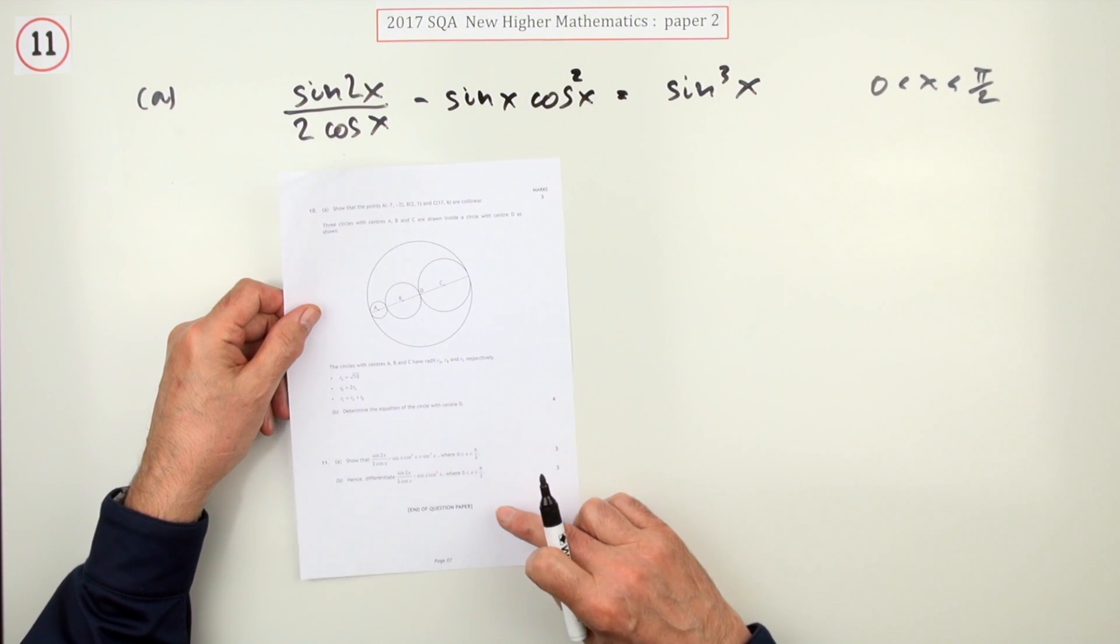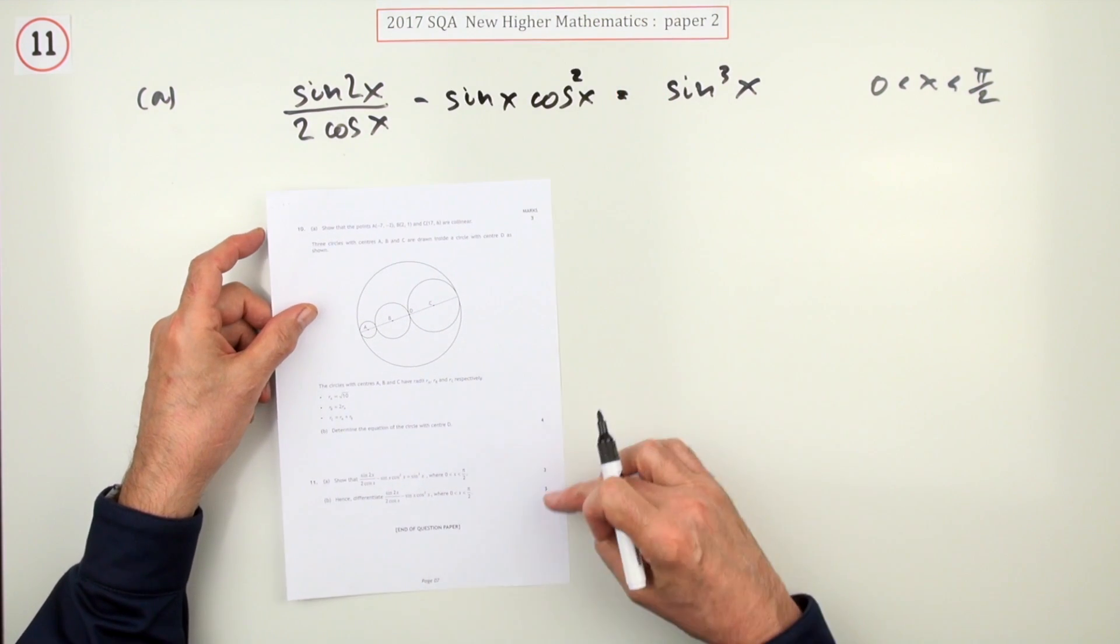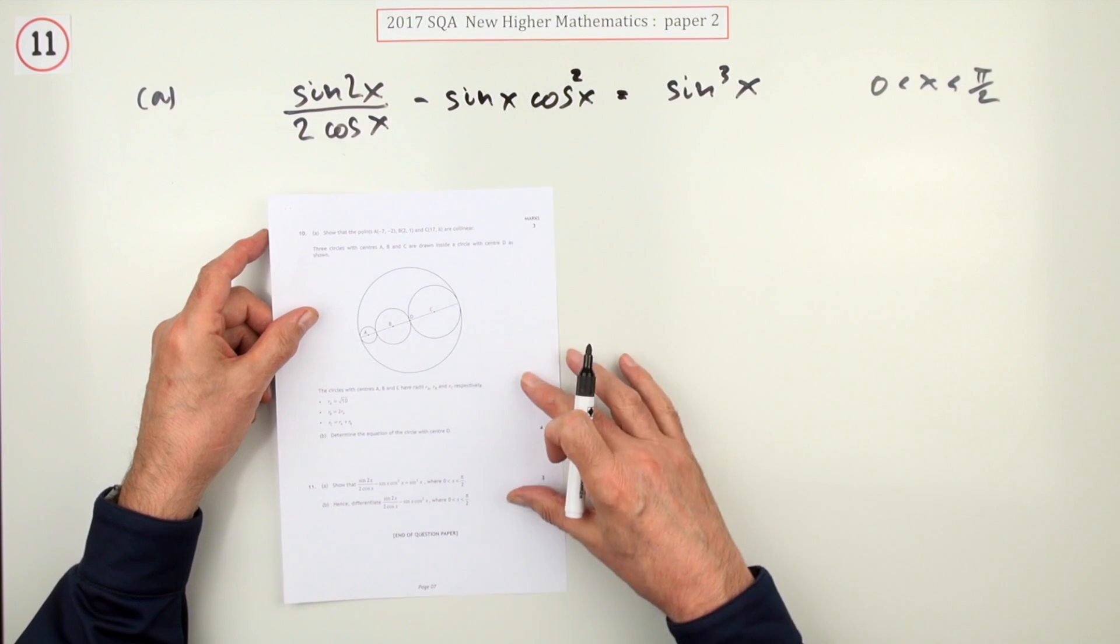So, number 11, the last question in paper 2 of the 2017 Higher Maths, and we've got two parts, six parts altogether, three marks for this first part.